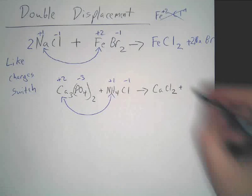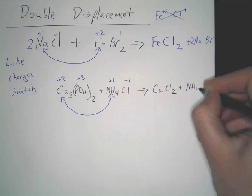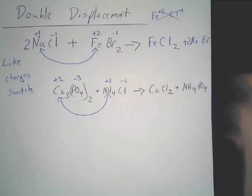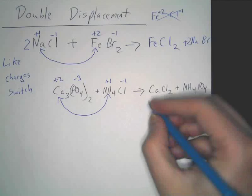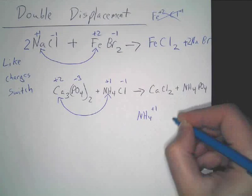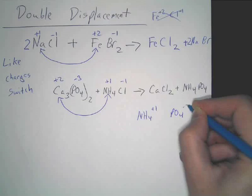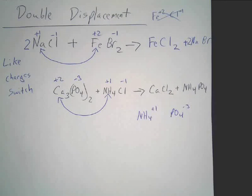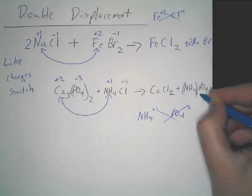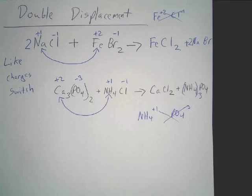Then you also end up with, in this case, NH4, and then we've got PO4. But to write that compound out correctly, you've got NH4 is plus one, PO4 is minus three. So, what do you end up doing? So, it's going to be NH4 in parentheses, three, and then PO4.